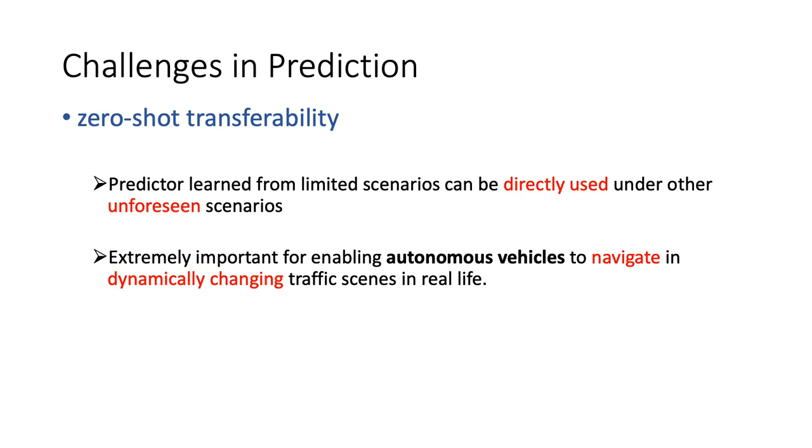The third challenge is zero-shot transferability, where we wish the predictor learned from limited scenarios can be directly used under other unforeseen scenarios, and such ability is extremely important for autonomous vehicles to navigate in dynamically changing environments.